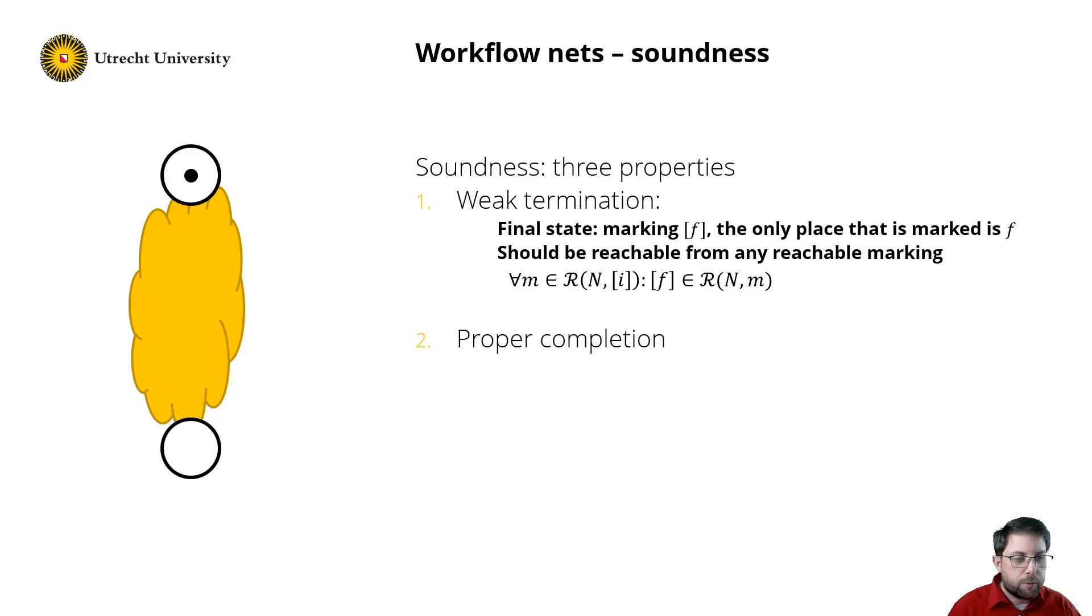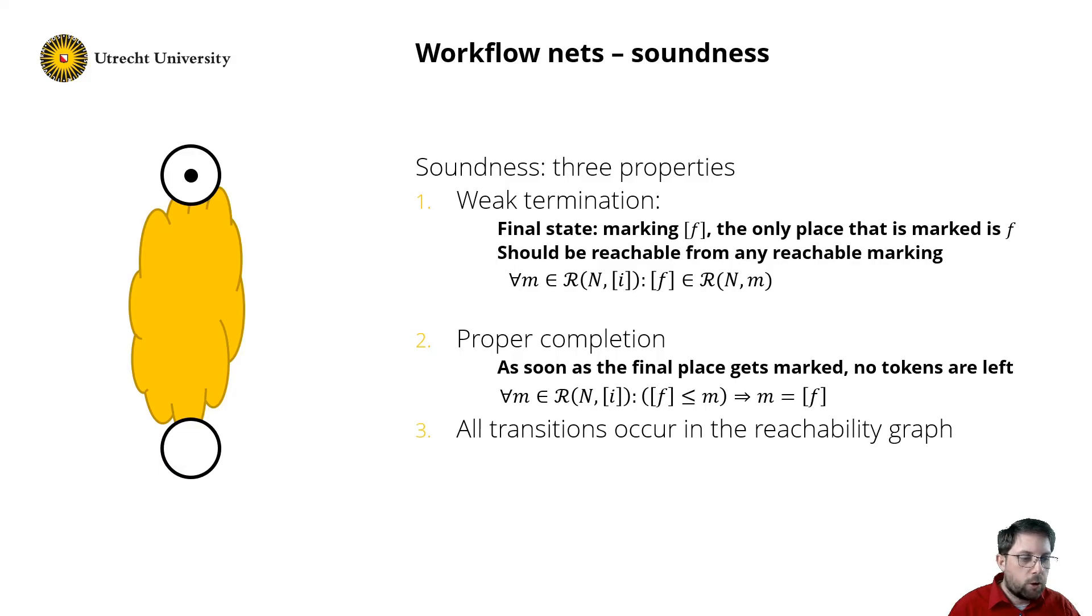Proper completion is the second property. It states that as soon as you reach your goal, thus having a token in place f, there should be no work left. In Petri net terms, once you mark the final place f, all other places should be empty. And last, we want that all transitions occur in the reachability graph. And this signifies that all transitions can contribute to achieving the goal.